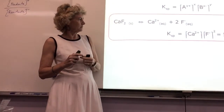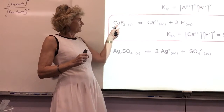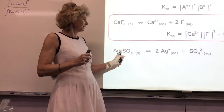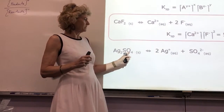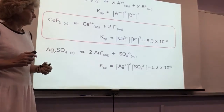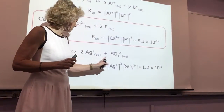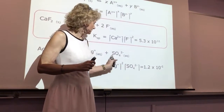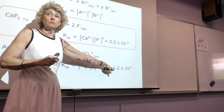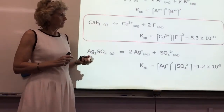Here's a three-ion example with two cations and one polyatomic anion. Two silvers and one sulfate, so the Ksp is the silver ion squared times the sulfate ion to the first power. That value is also not very soluble — silver sulfate is not very soluble; silver bromide hardly dissolves at all. Look at how really tiny these solubilities are.